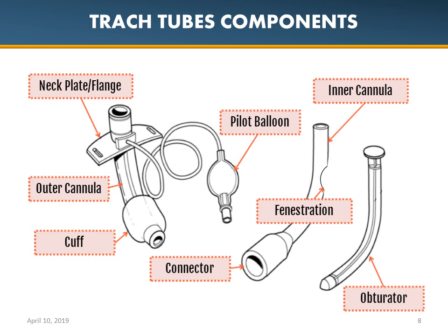Let's talk about trach tubes and their different components. We have a neck flange and plate, where you can find the inner diameter, outer diameter, sizes, whether they're fenestrated, and if there's an inner lumen — like a fact sheet right on it. We also have the outer cannula, which is predominantly always going to be in place. This one happens to be cuffed, as indicated by the pilot balloon. The connector is on the end of the inner cannula and is the 15mm adapter. This tube happens to be fenestrated, and here is the obturator, which helps facilitate insertion.